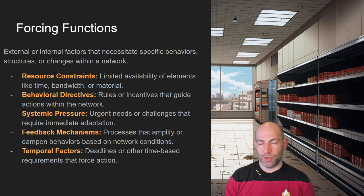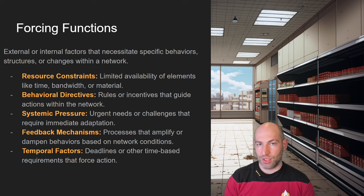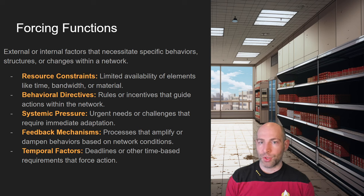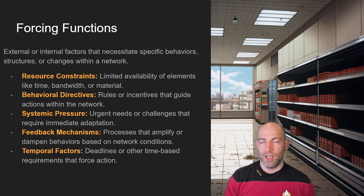An example of this is the stock market, where you have fail safes that if the stock market detects a major sell-off, it actually stops trading and can reverse those trades. That's an example of a prohibitive forcing function — it says, we know that you're trying to do these things, but we're not going to let you. So you have inhibitory or prohibitory forcing functions, as well as excitatory forcing functions, which say that at a certain point you must do this thing.